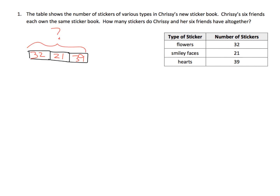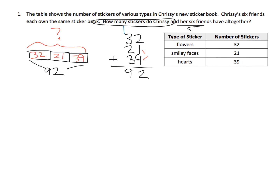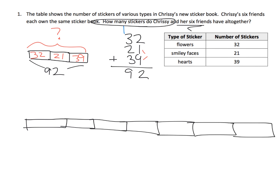The first thing we need to do is figure out how many stickers there are altogether, so I'm going to stack that up: 32, 21, and 39. Nine and 1 is 10, plus 2 is 12 — that's 2, carry the 10. Then counting the tens: 10, 20, 30, 40, 50, 60, 70, 80, 90 — so we have 92 stickers. We want to figure out how many stickers Chrissy and her six friends have, so we need seven of these, each containing 92.